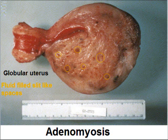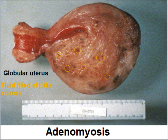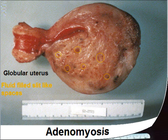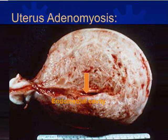This is the hysterectomy specimen of the uterus. You can see it is globular in shape and there are small fluid-filled slit-like spaces, with markedly increased thickness of the uterine wall. In another specimen, there is a slit-like endometrial cavity and a globular uterus.